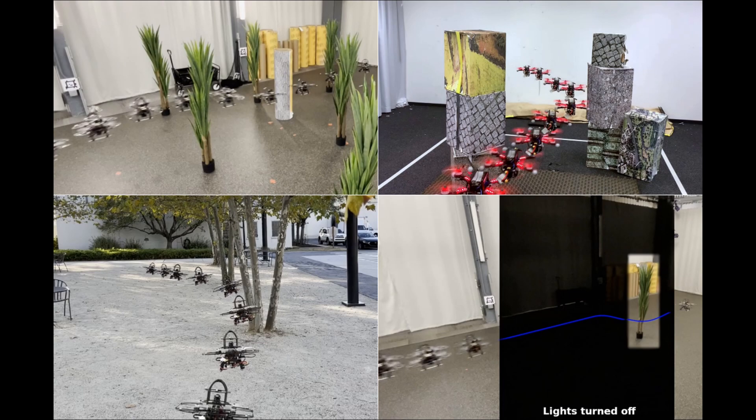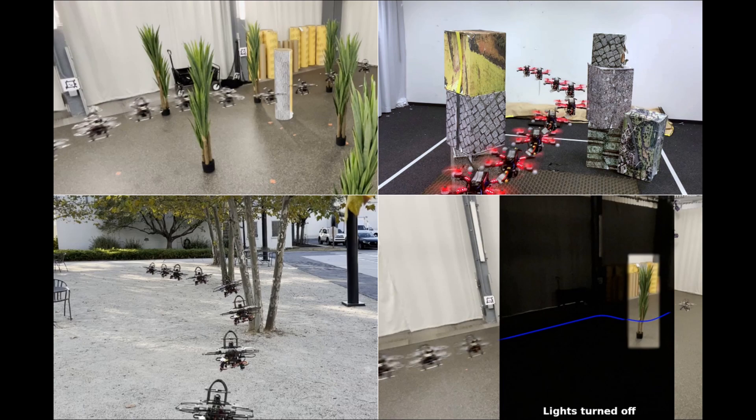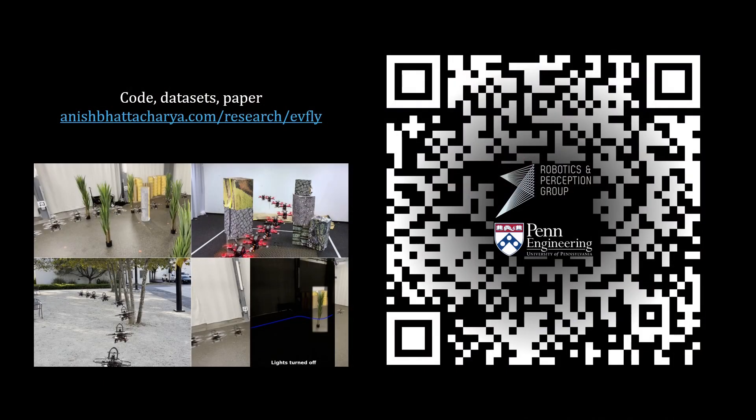We test our method on various scenes, indoor and outdoor, single and multi-obstacle, at speeds reaching 5 meters per second. We hope that this work can enable simulation pre-training for event-based vision-to-control robot policies. Check out our website with links to open-source code, datasets, and installation instructions.